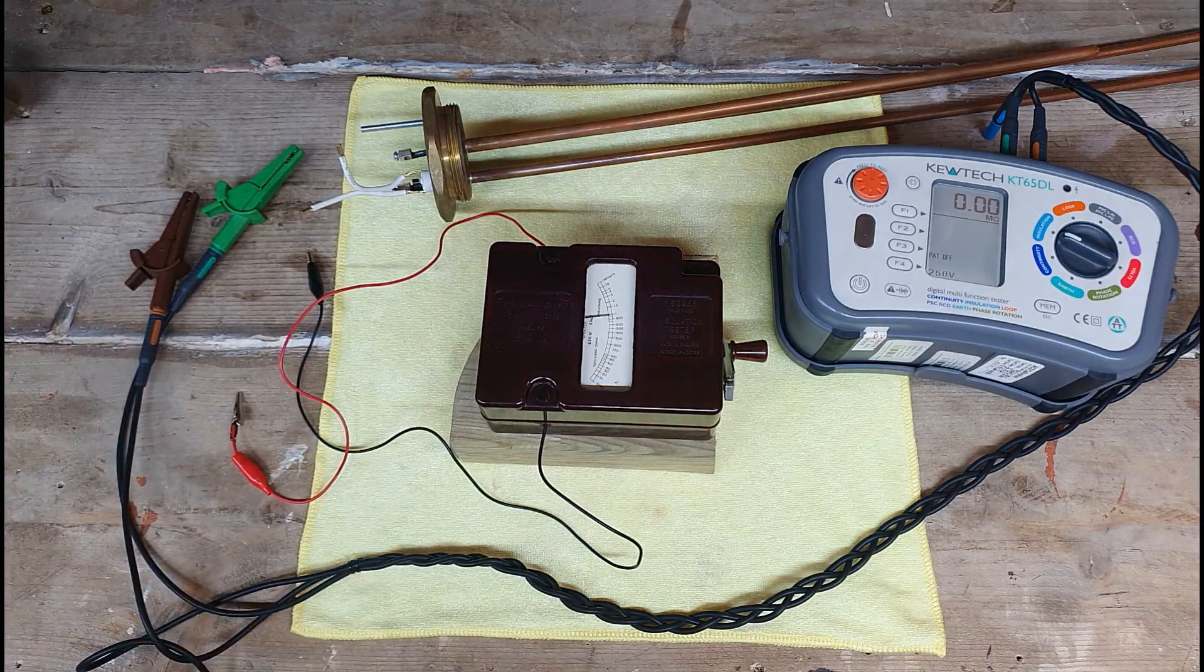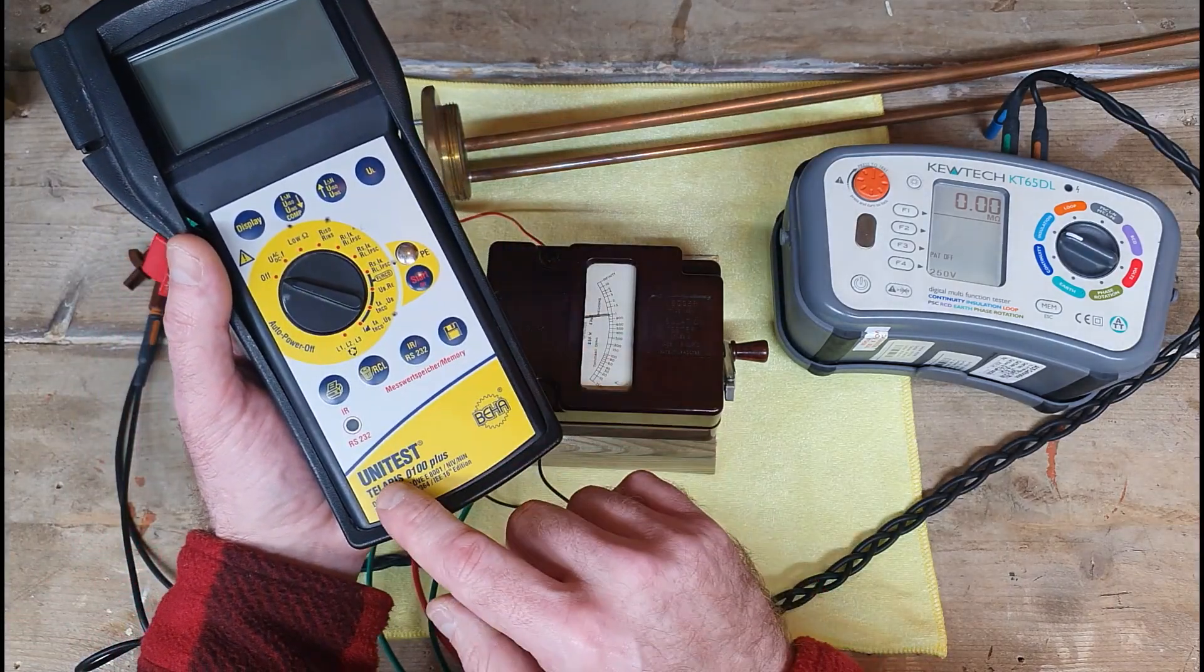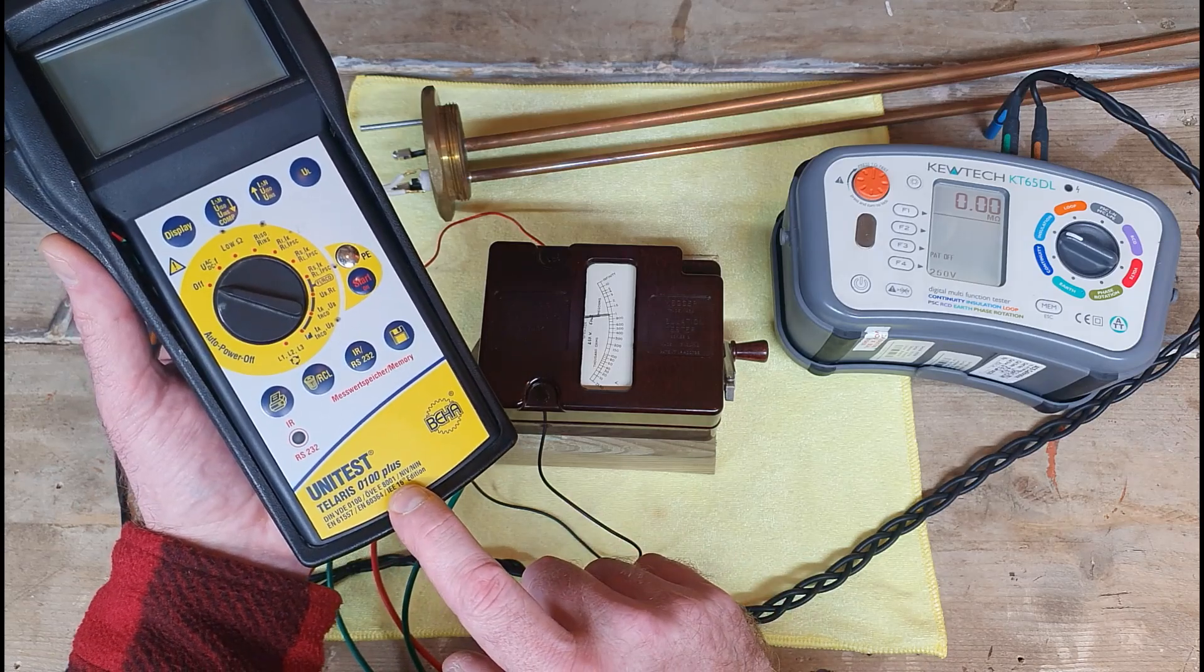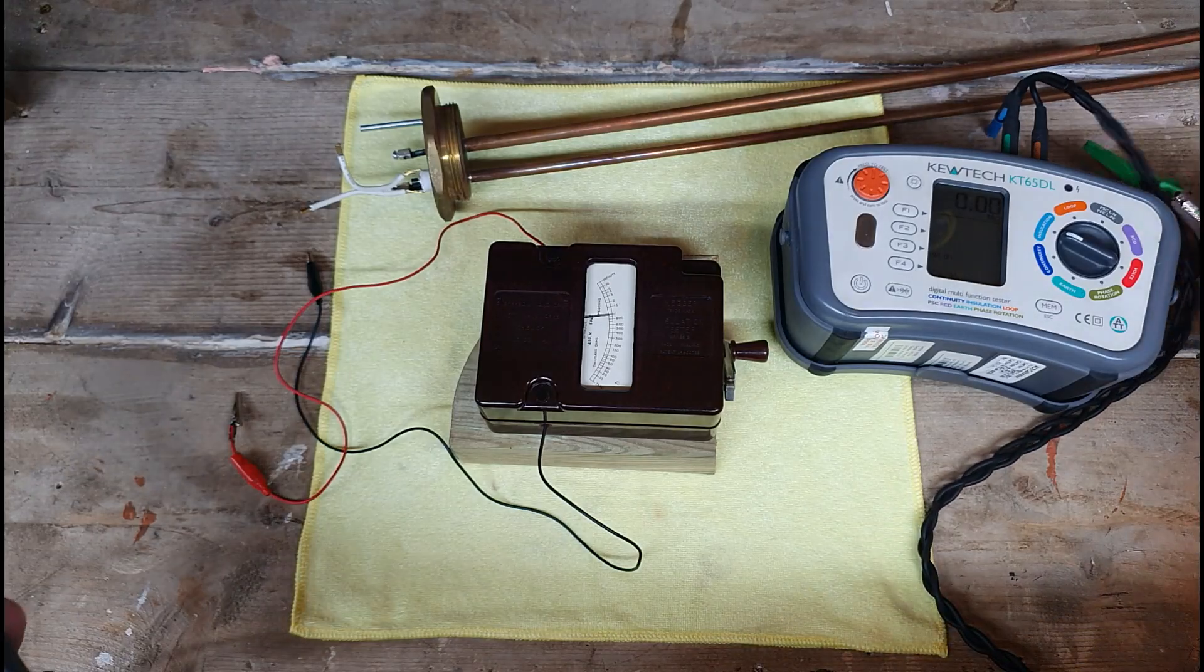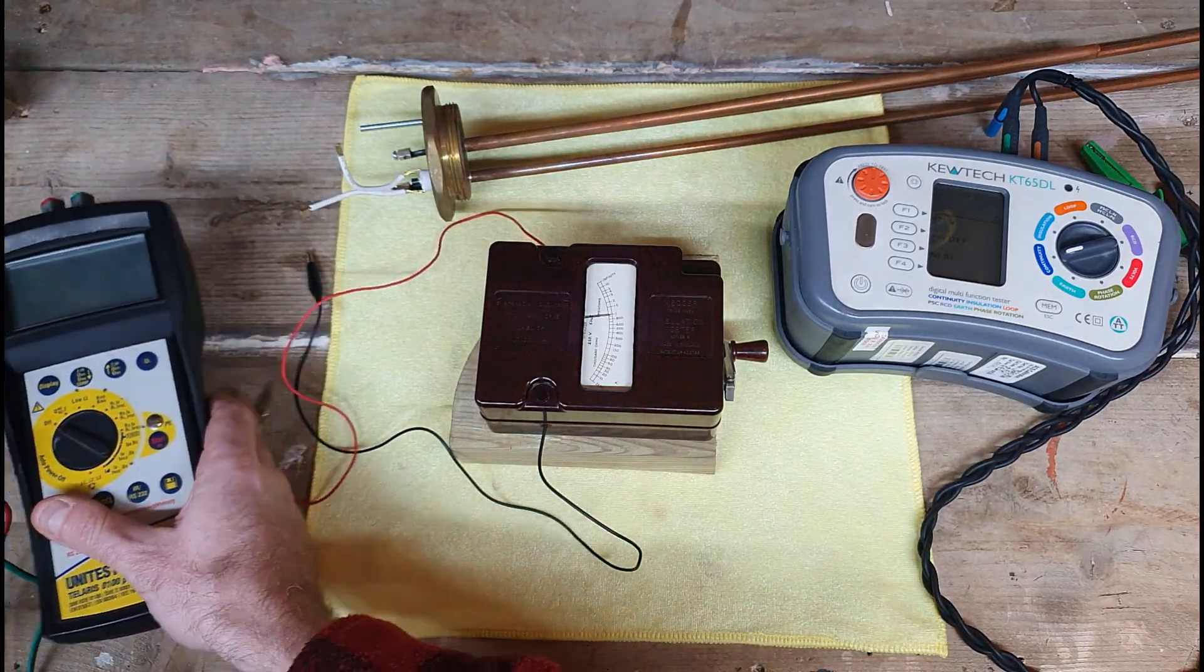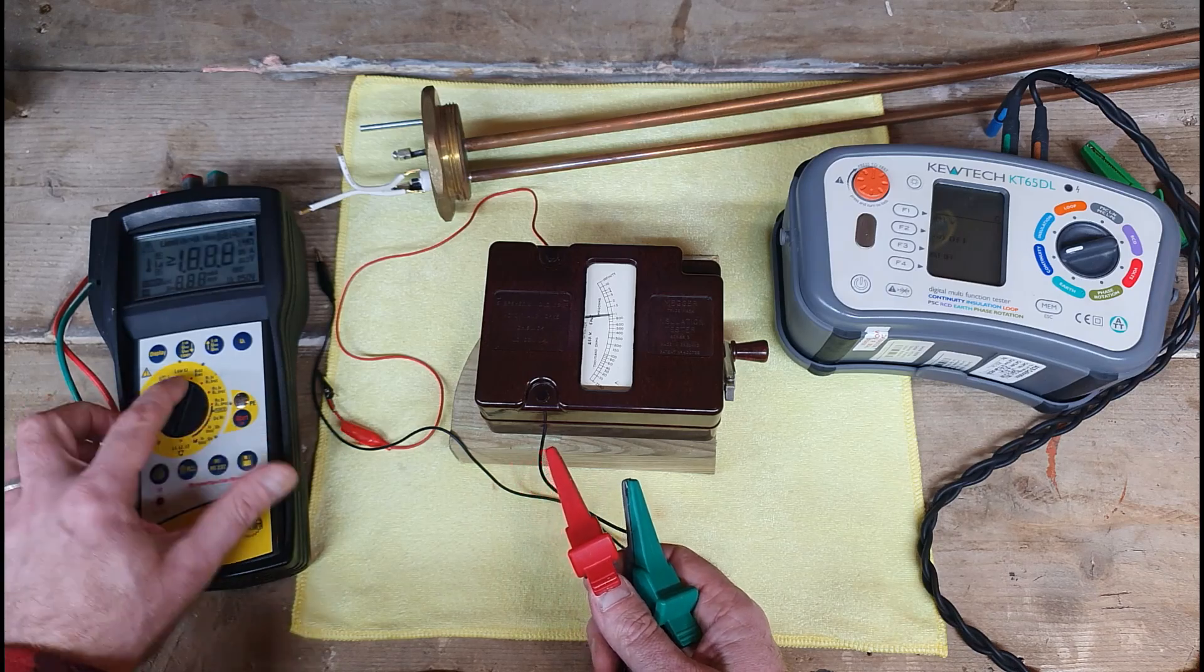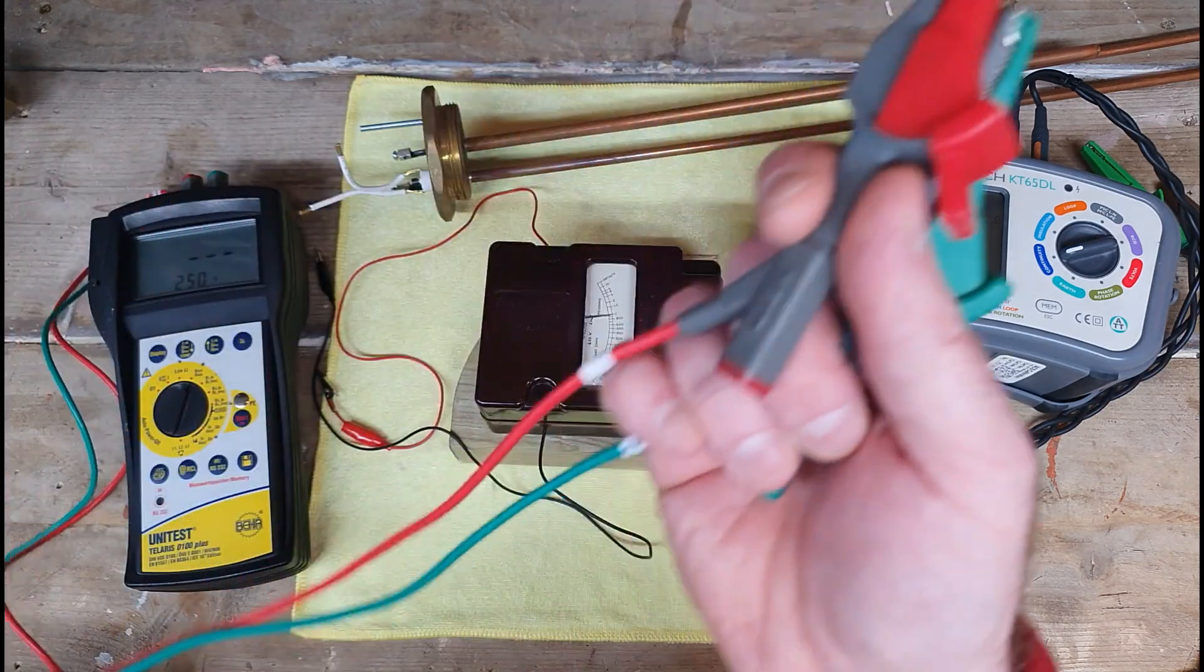We've got another tester here, we have the Beha Unitest Thalaris 0100 Plus, 16th edition no less. Like I said before, this was last seen on my previous video where we made a bit of a test off. Just leave that here and just knock that down to continuity just in case I press anything and something gets zapped. We'll flick this up to insulation resistance there, 250 volts.